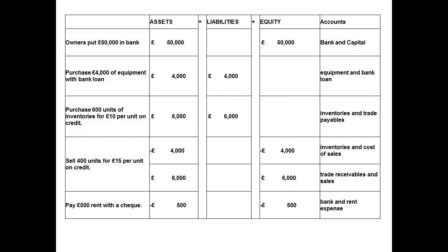To begin, let us review the transactions we used. First, there was investment of capital, purchase of equipment, purchase of inventories, sale of inventories, and payment of a rent expense.